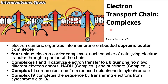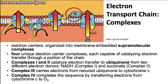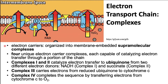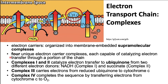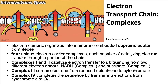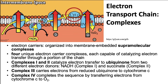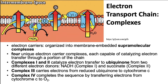The electron carriers of the respiratory chain are organized into membrane-embedded supramolecular complexes that can be physically separated. Gentle treatment of the inner mitochondrial membrane with detergents resolves four unique electron carrier complexes. Complexes I and II catalyze electron transfer to ubiquinone from two different donors — NADH via Complex I and succinate via Complex II. Complex III carries electrons from reduced ubiquinone to cytochrome c, and Complex IV completes the sequence by transferring electrons from cytochrome c to molecular oxygen to yield water.